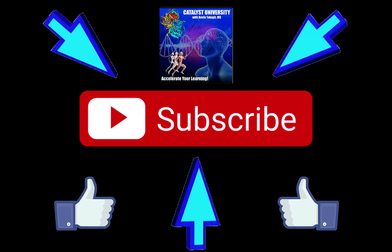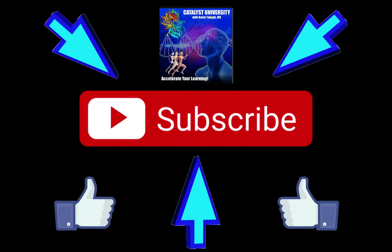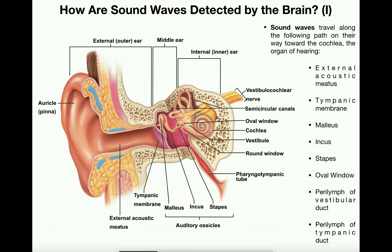Welcome back to Anatomy on Catalyst University. My name is Kevin Tokov. In this playlist we've been talking about special senses. We've already talked about vision and how that works on a physiological level. Now we're going to go into hearing, and the physiology of that is called audition.